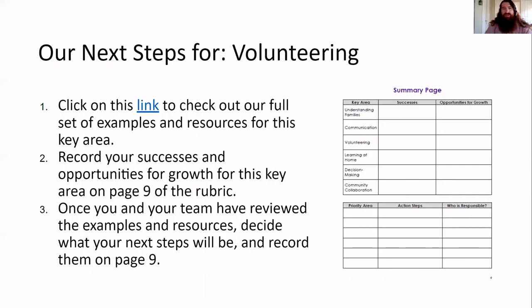Now that you've come up with a rating for volunteering and have explored some examples and resources for this key area, you are ready to put your next steps for volunteering on paper. Pause the presentation and complete the first table on page nine of the rubric for volunteering. Write out your successes and opportunities for growth. Then pause the presentation again to discuss your priorities and action steps for the next few months for volunteering and record them on page nine.